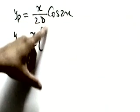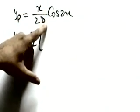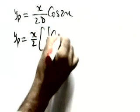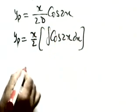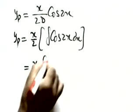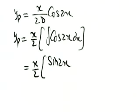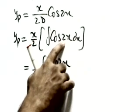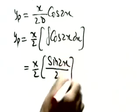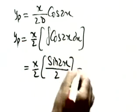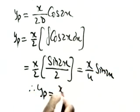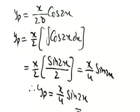Now x/(2d) · cos(2x): since d in the denominator means integration, 1/d means integrate. So this becomes x/2 · ∫cos(2x)dx. The integral of cos(2x) is sin(2x)/2, so we divide by 2. Therefore the particular integral is x/4 · sin(2x).